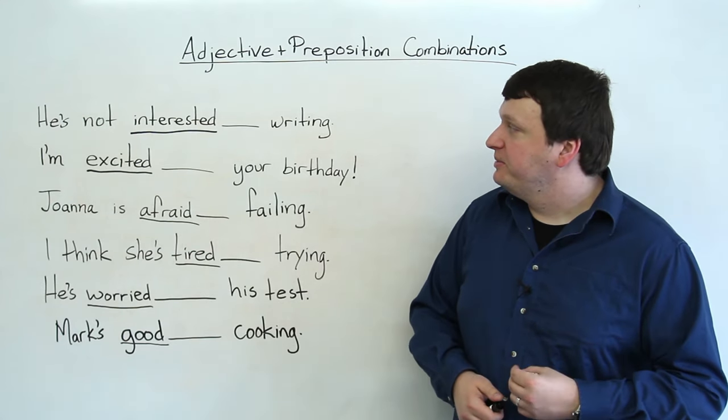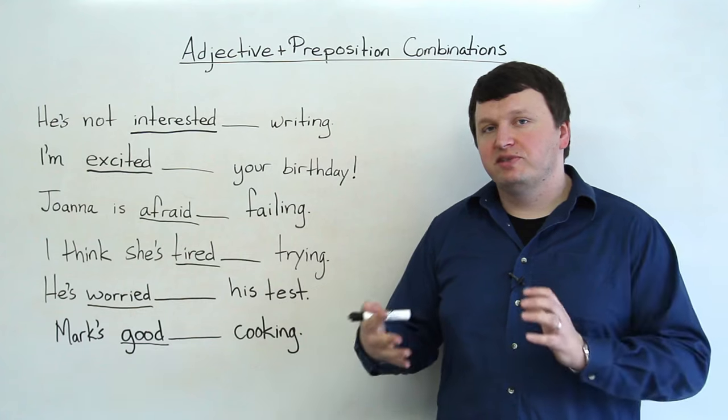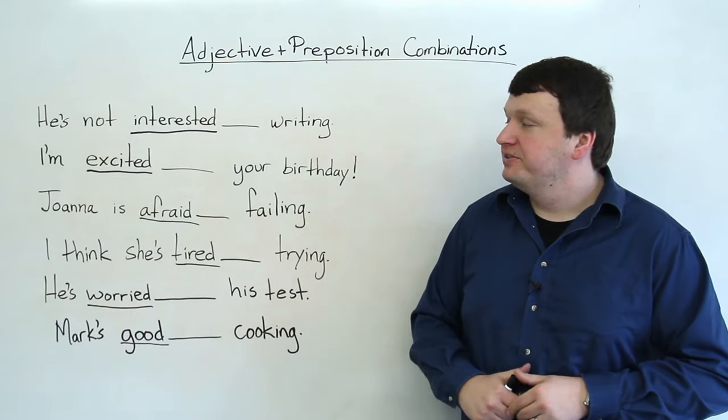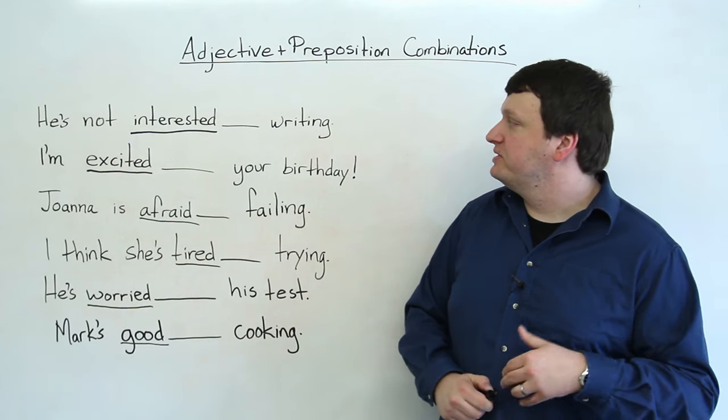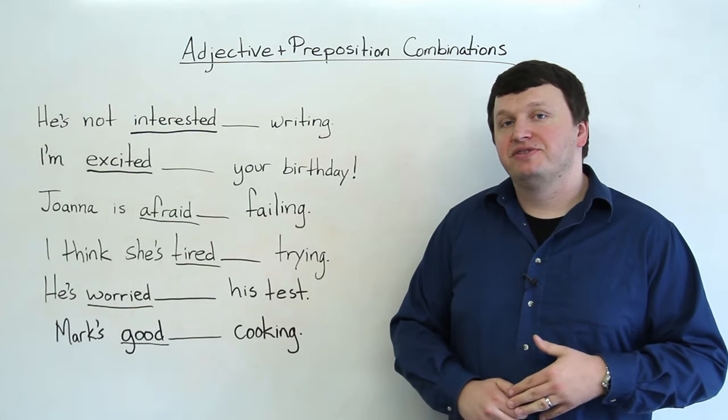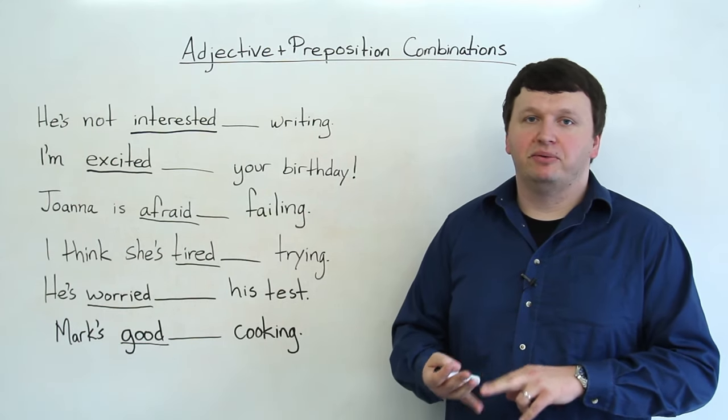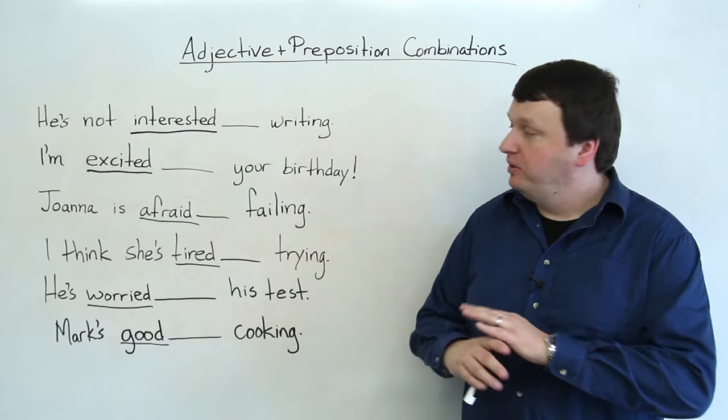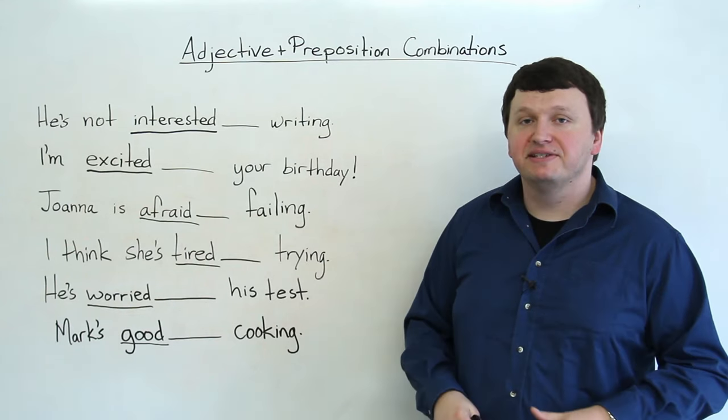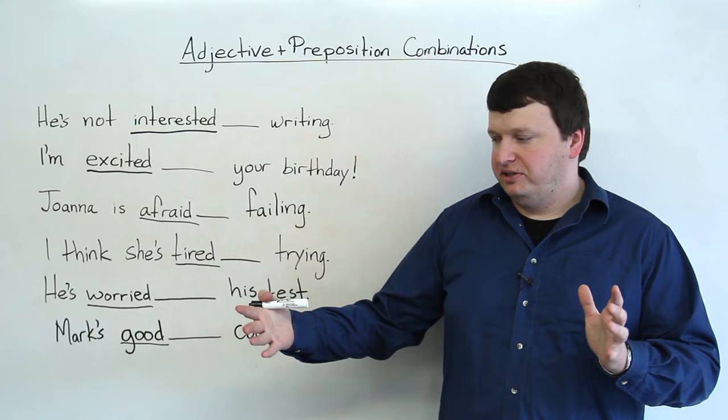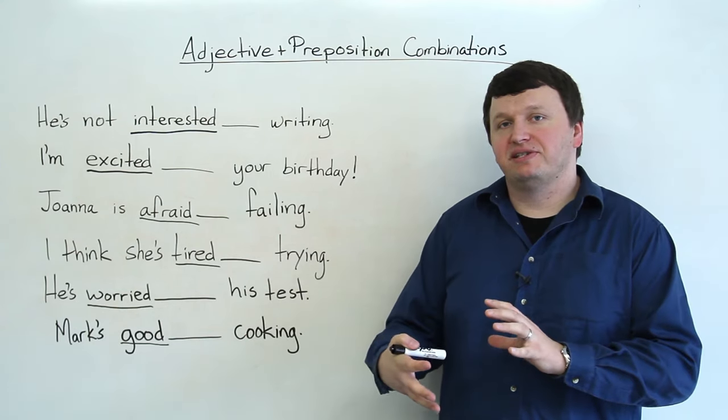Now, before this, we have to understand which prepositions are commonly put with these adjectives. So in the first sentence, he's not interested in writing. So think of as many prepositions as you can. You have at, on, in, you have about, around, by, with, tons and tons of possibilities. So what you have to know is, okay, which preposition always goes with this adjective?